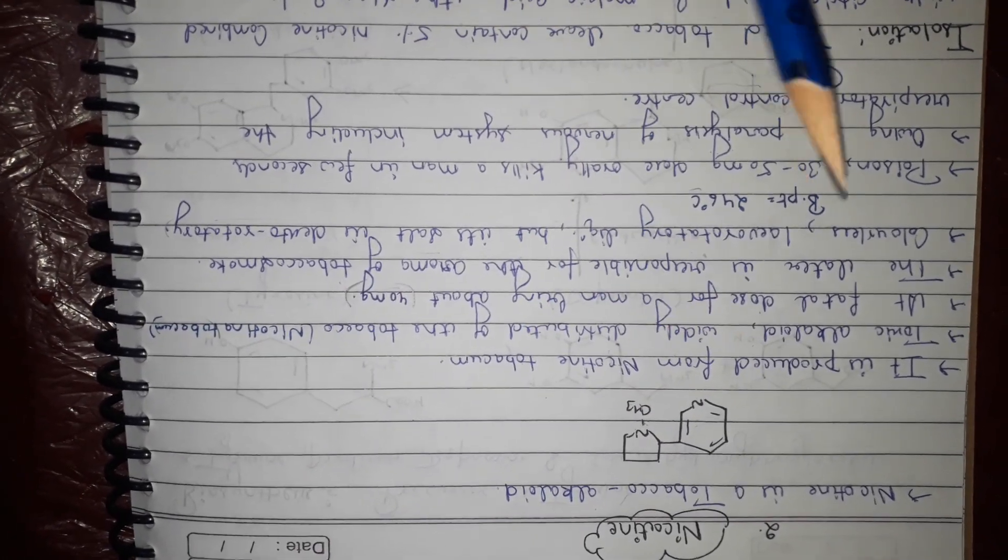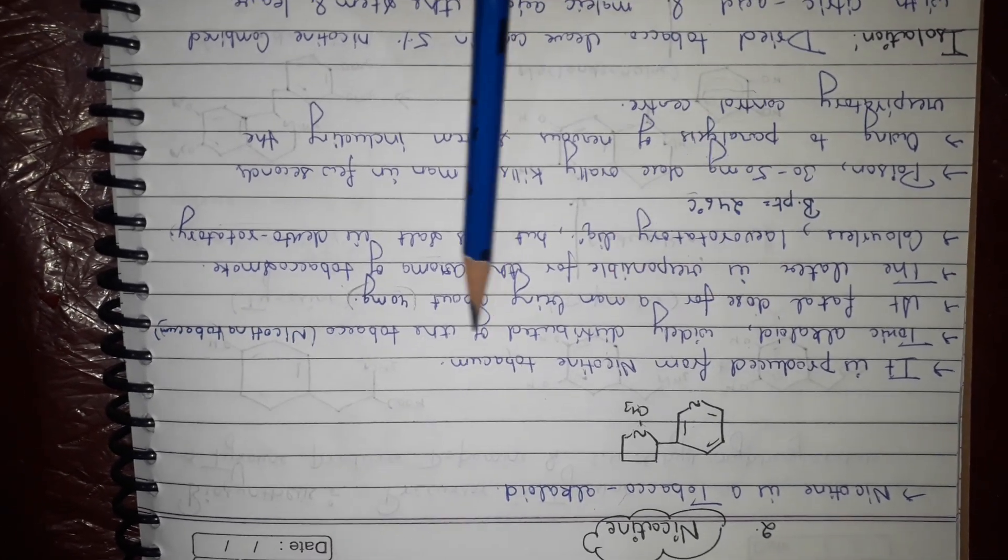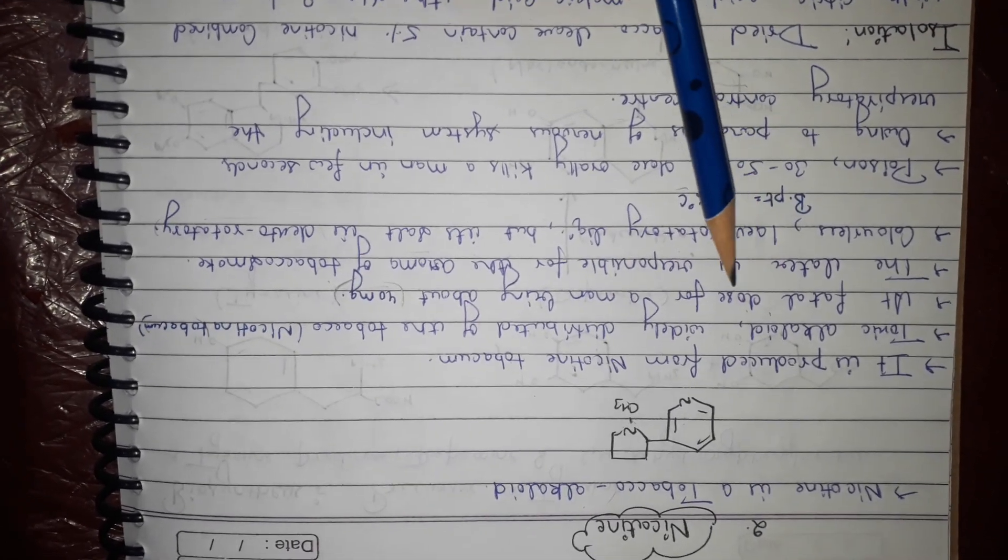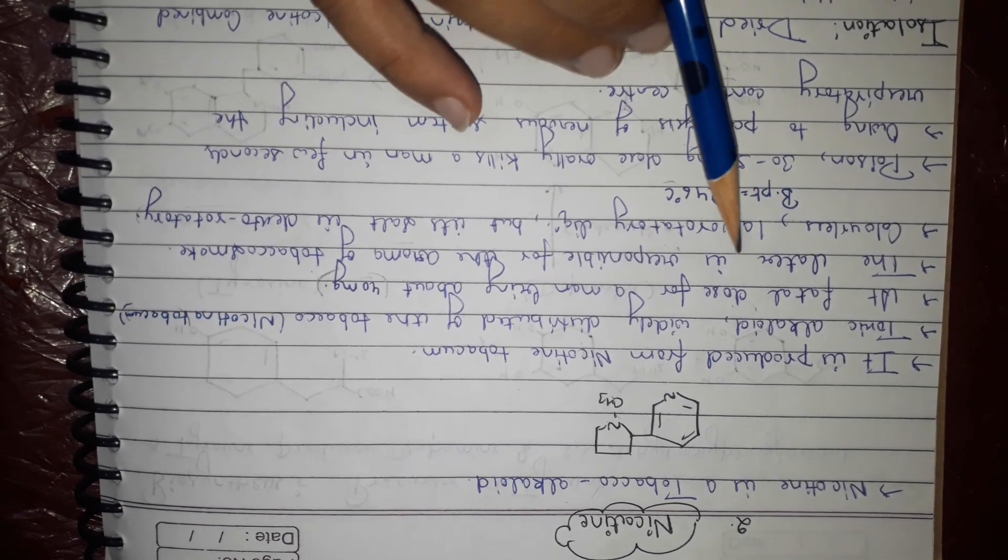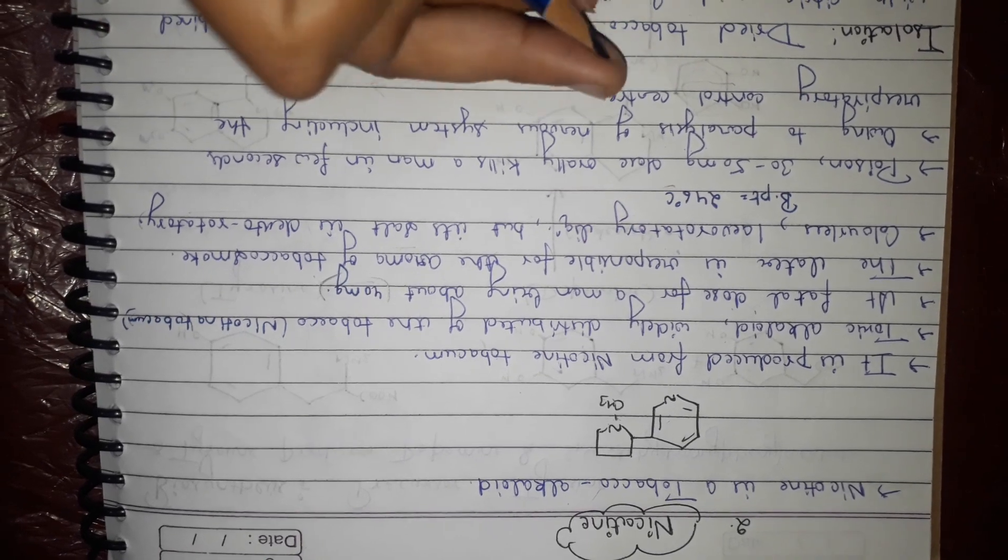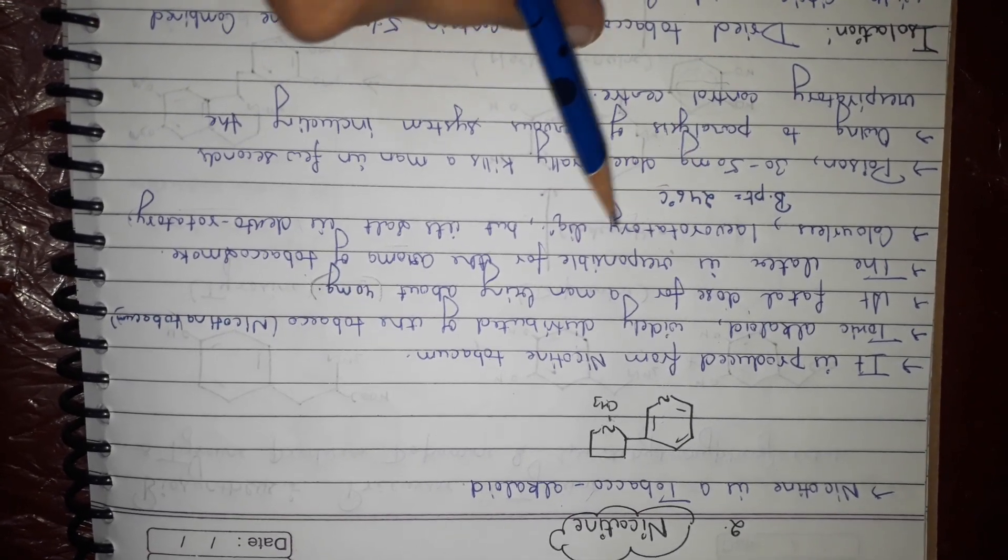It is a toxic alkaloid widely distributed in tobacco. Fatal dose for men is about 40 grams. It is responsible for the aroma of tobacco smoke. It is a colorless levorotatory liquid but also exists as dextrorotatory form.